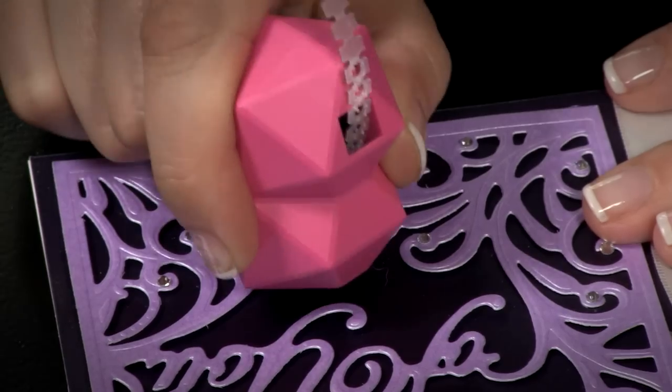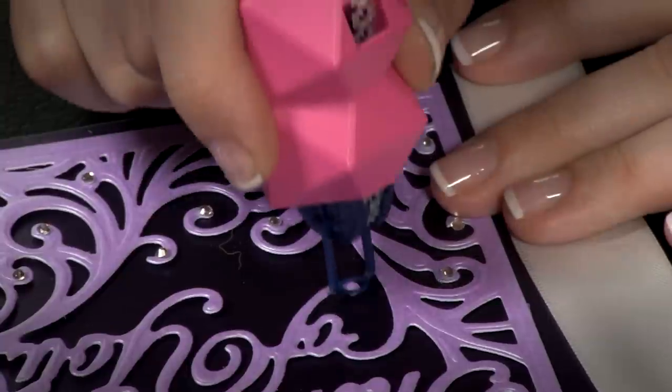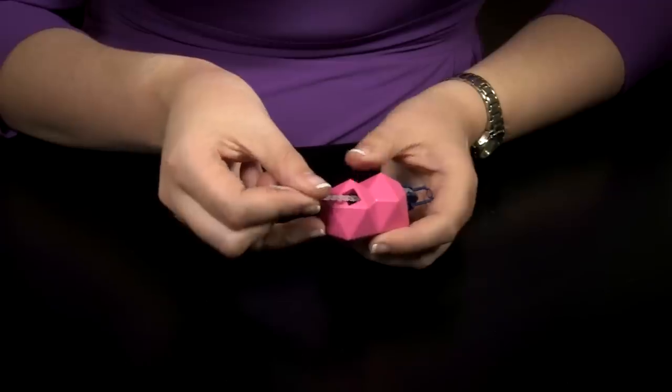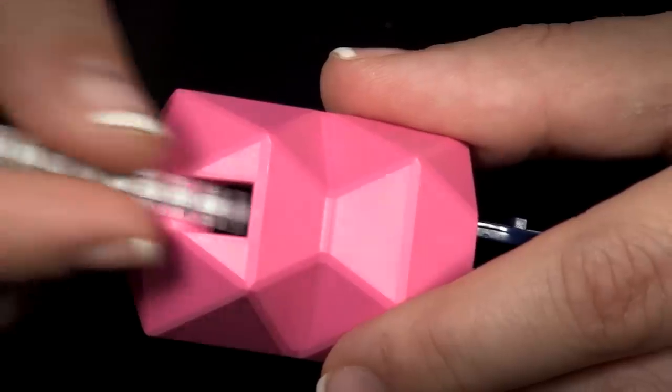Simply press the applicator down exactly where you want the gem. When you're ready to use a different color gem, just swap out the strip for a new color.